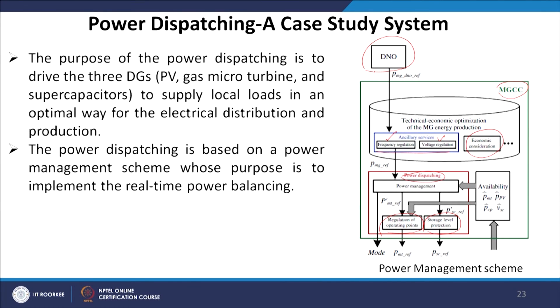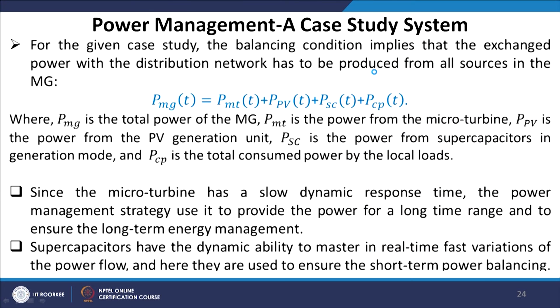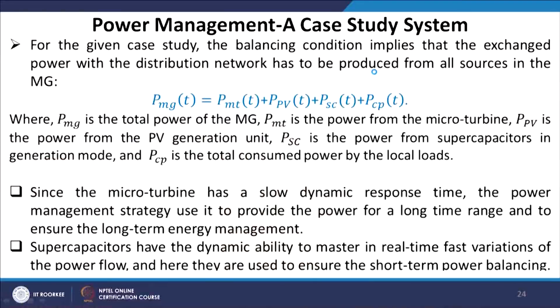The power dispatching is based on a power management scheme whose purpose is to implement real-time power balance. Before sending the dispatching power set-point to each unit, some protection and regulation strategies need to be added. The balancing condition implies that the exchange power with the distribution network must be produced from all sources in the microgrid. The total power PMG of the microgrid comes from the micro turbine, PV generation, super capacitor, as well as the total consumed or critical loads.